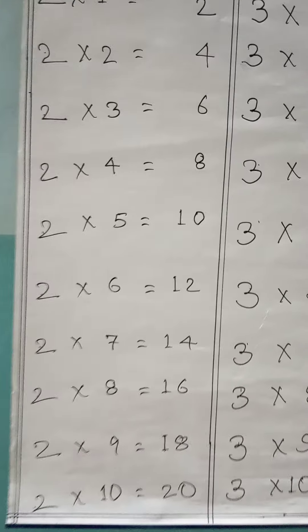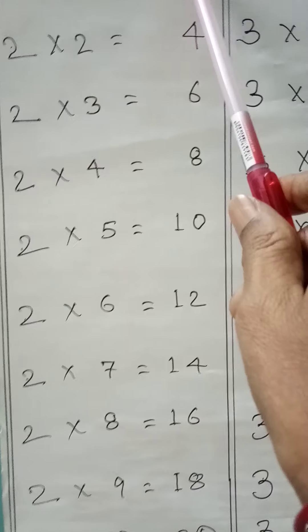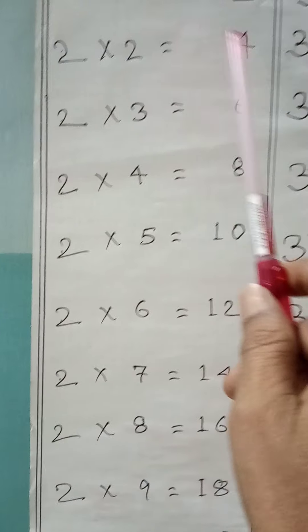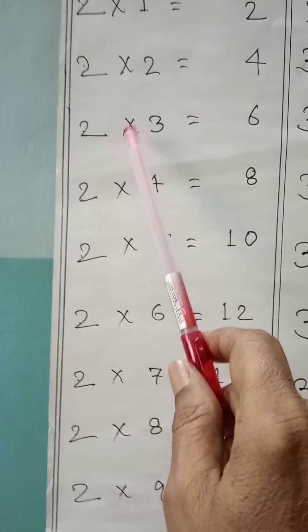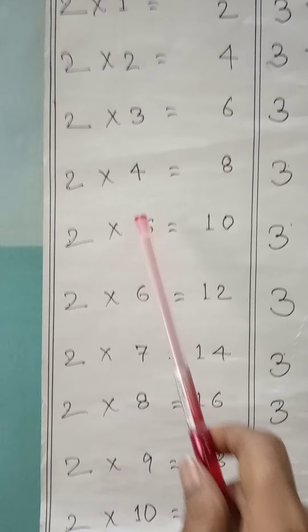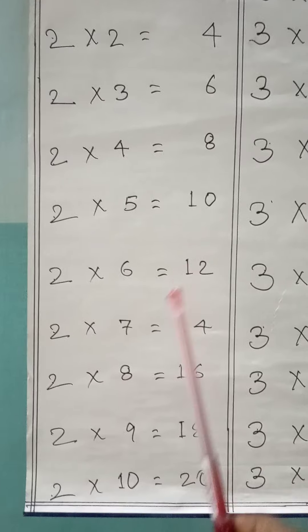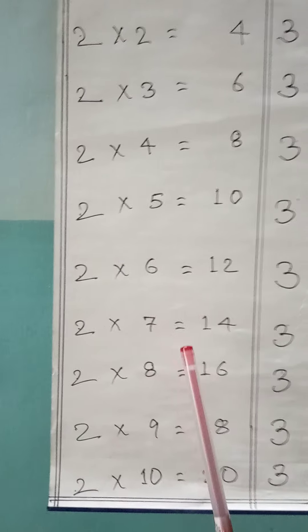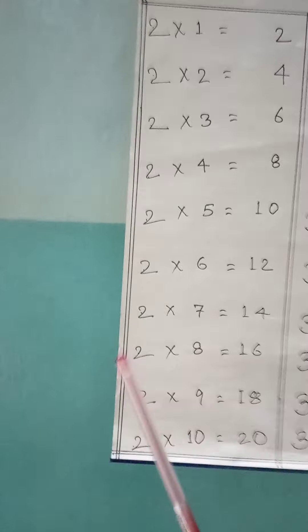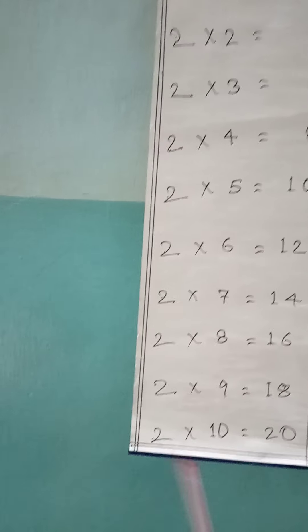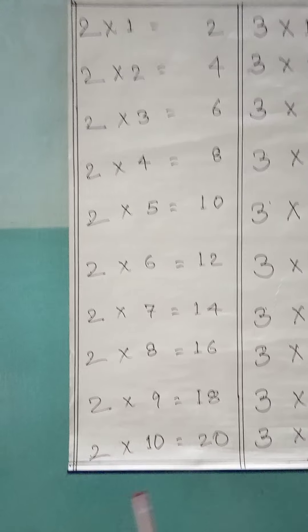Repeat again. 2 × 1 = 2, 2 × 2 = 4, 2 × 3 = 6, 2 × 4 = 8, 2 × 5 = 10, 2 × 6 = 12, 2 × 7 = 14, 2 × 8 = 16, 2 × 9 = 18, 2 × 10 = 20.